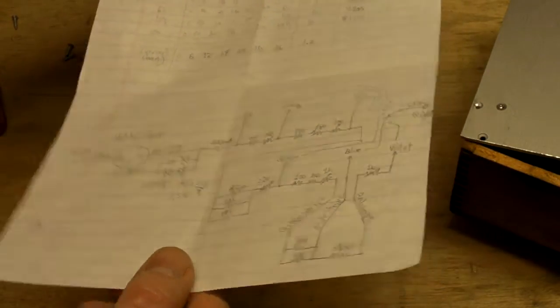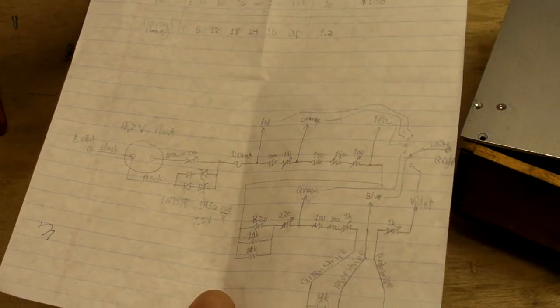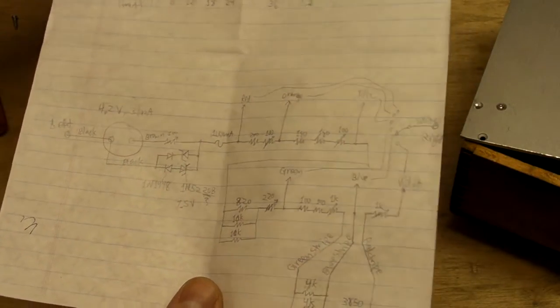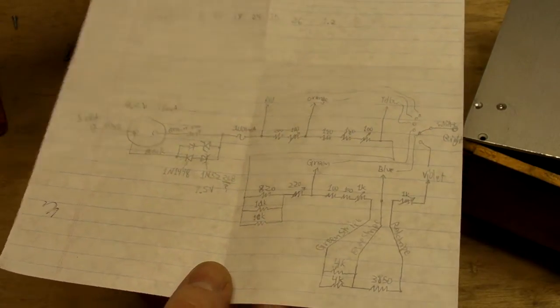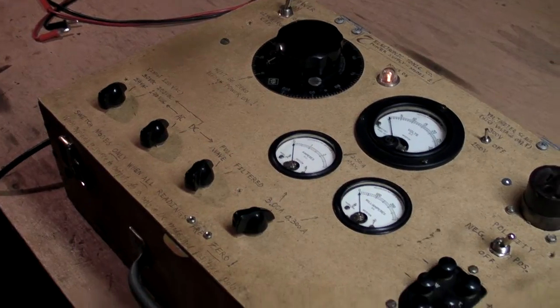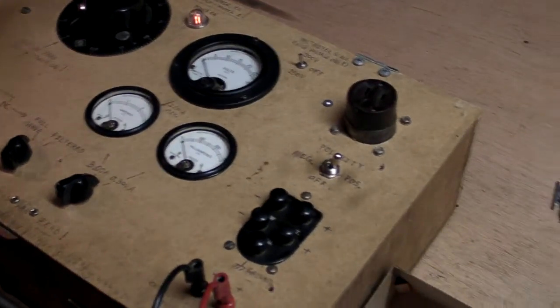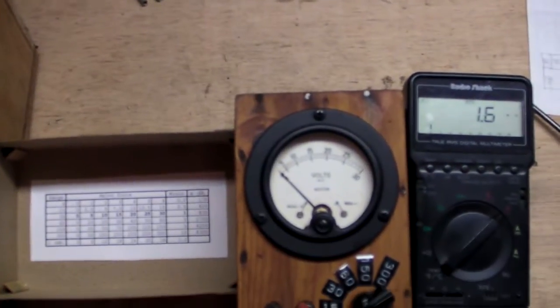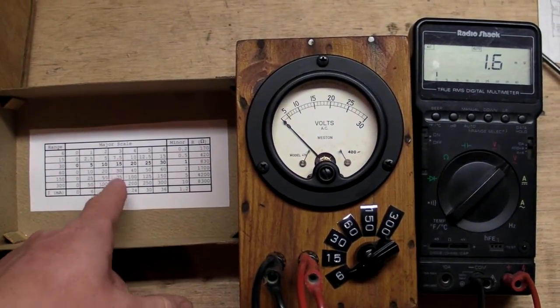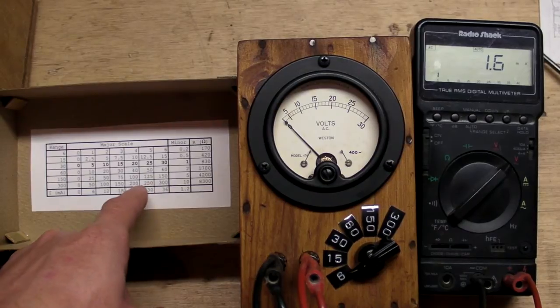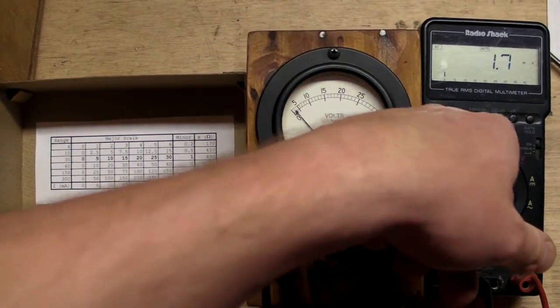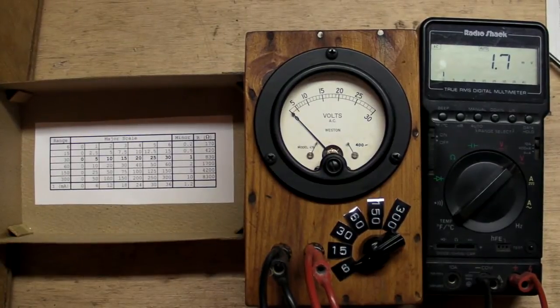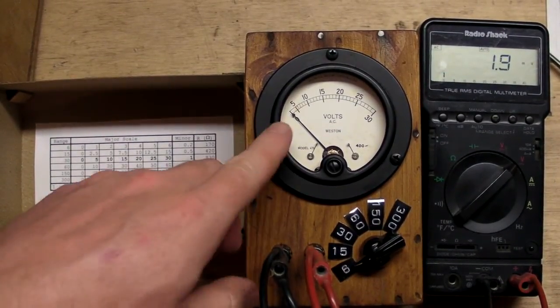I'm going to hook it up and see how good of a voltmeter this thing really is, see if it still works after all this time. Okay, I got it hooked up to my homemade power supply. There's the different scales here, just for reference. I have it on the six volt scale right now and comparing it to my other DMM over here.